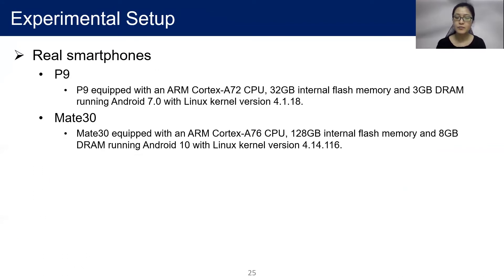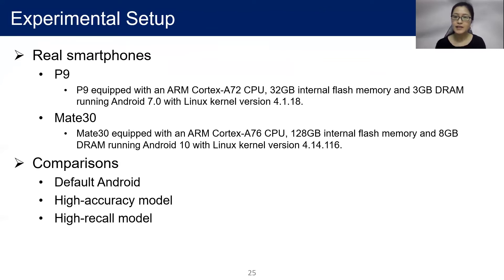Here is our experimental setup. We implement and evaluate CacheSifter on two real smartphones, Huawei P9 and Mate 30. The baseline is the default Android system. We compare two machine learning categorization models: a high accuracy model and a high recall model. The high accuracy model treats all types with the same priority, while the high recall model attempts to minimize inaccurate categorization to reduce the redownload penalty.